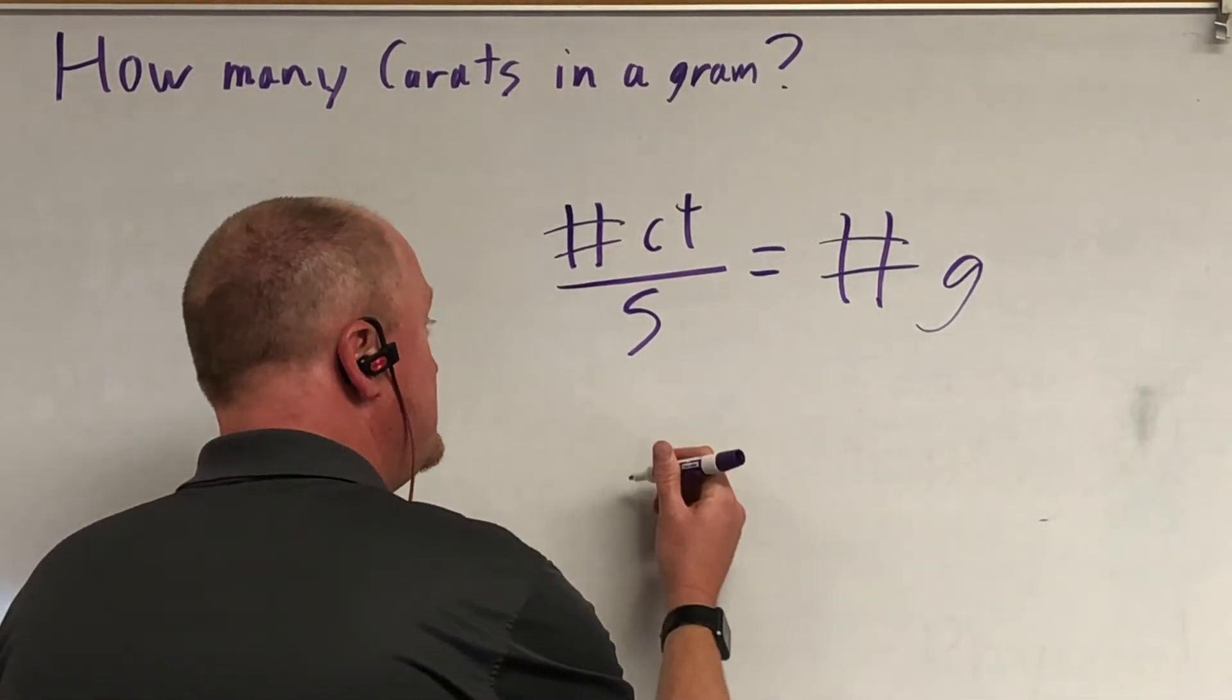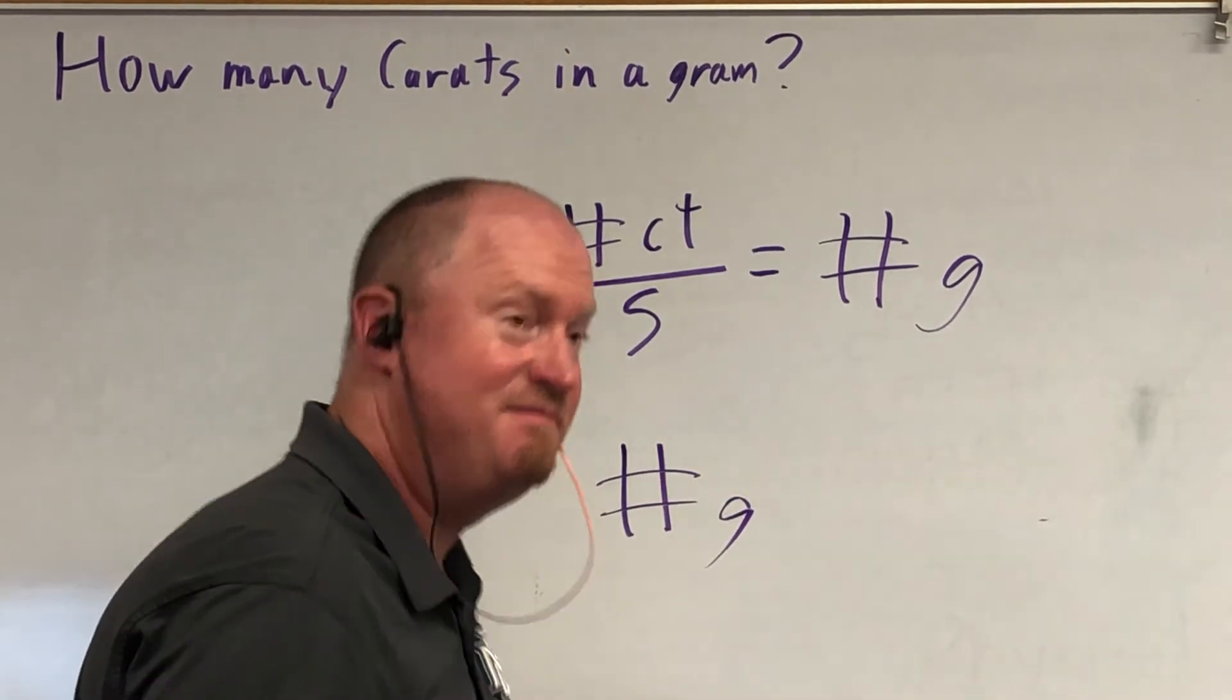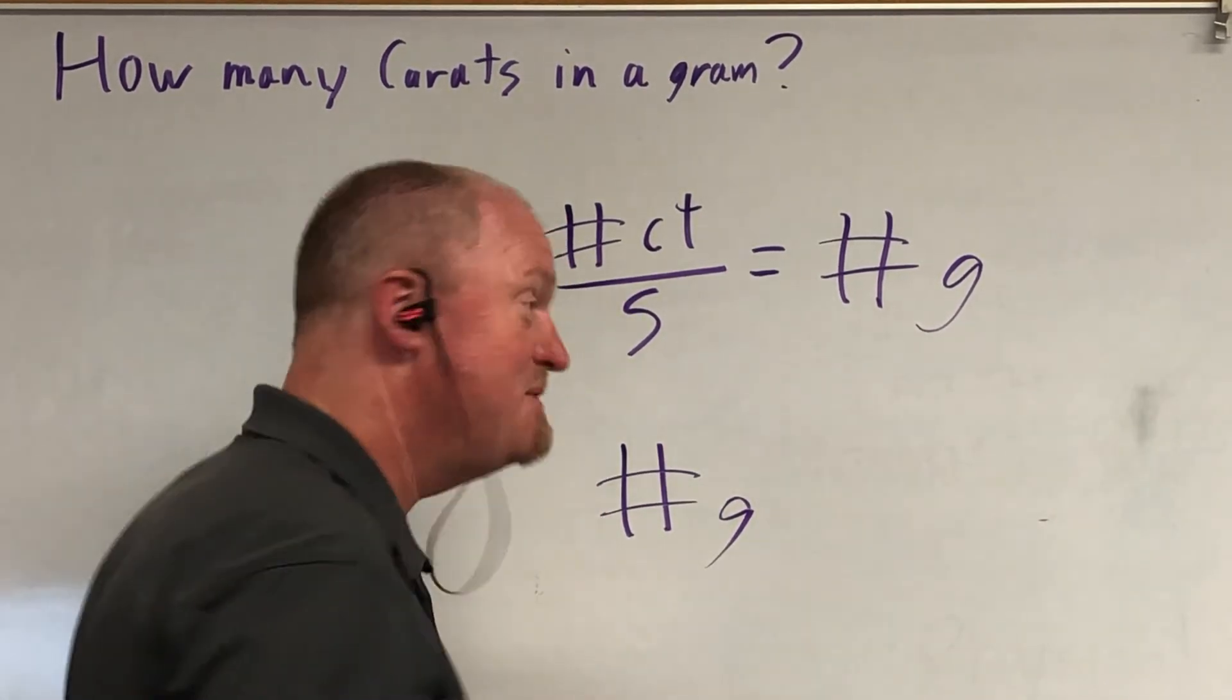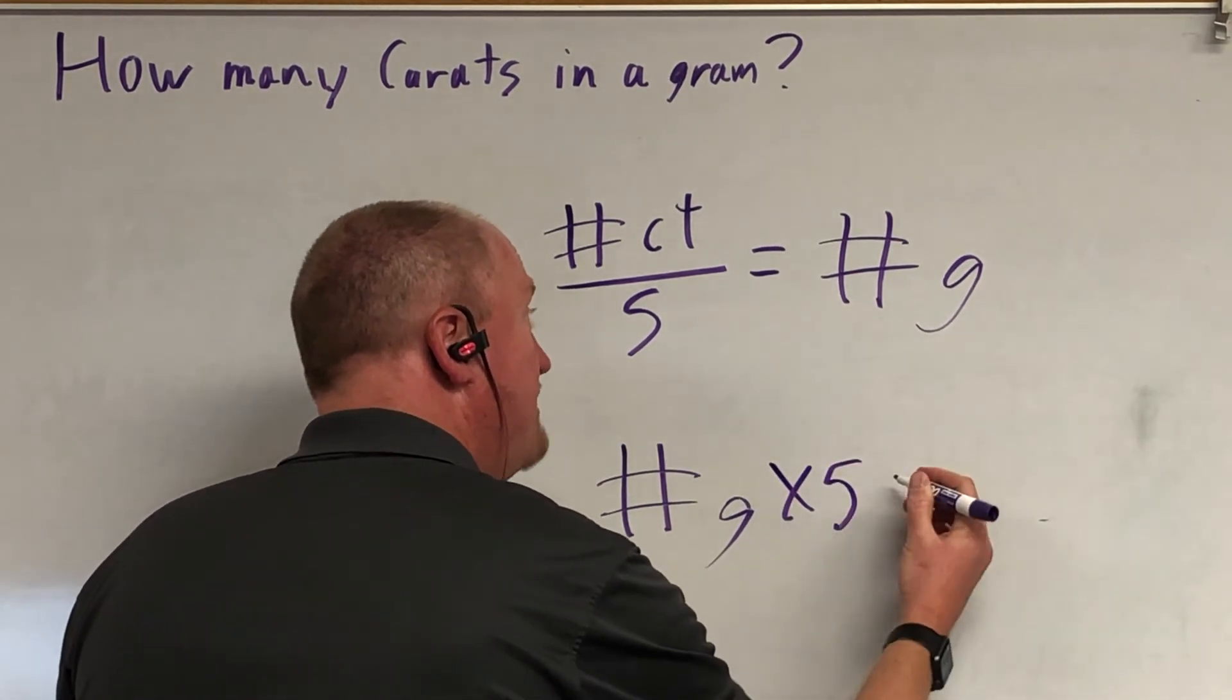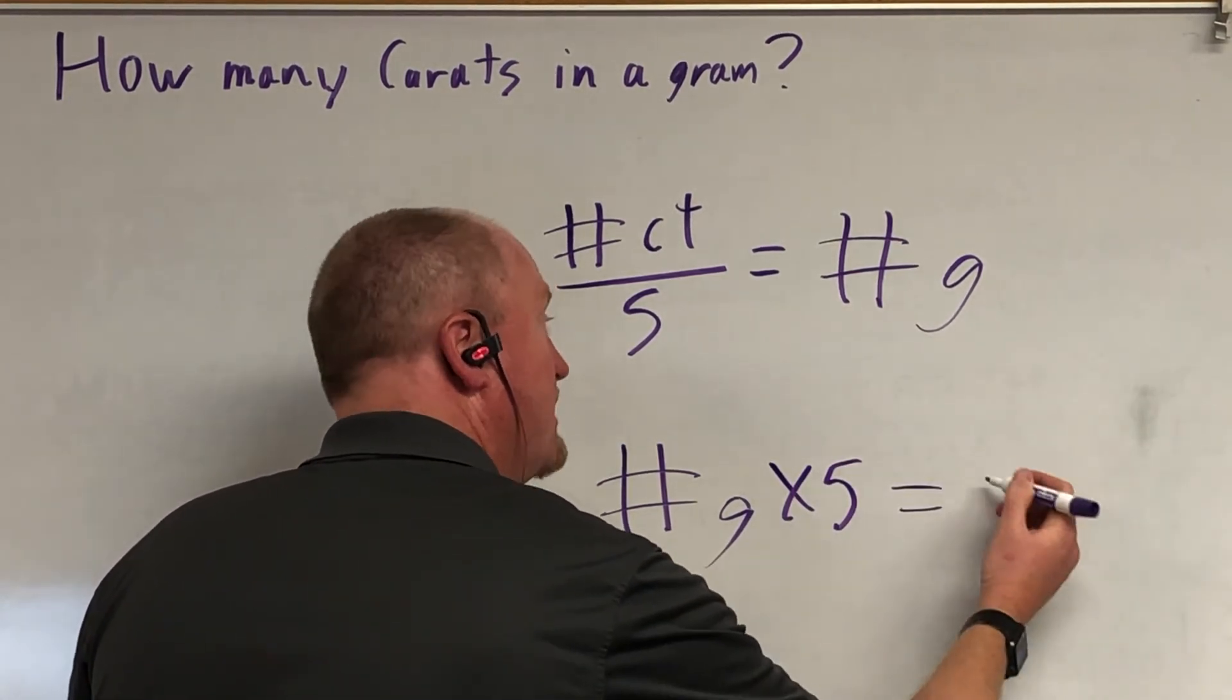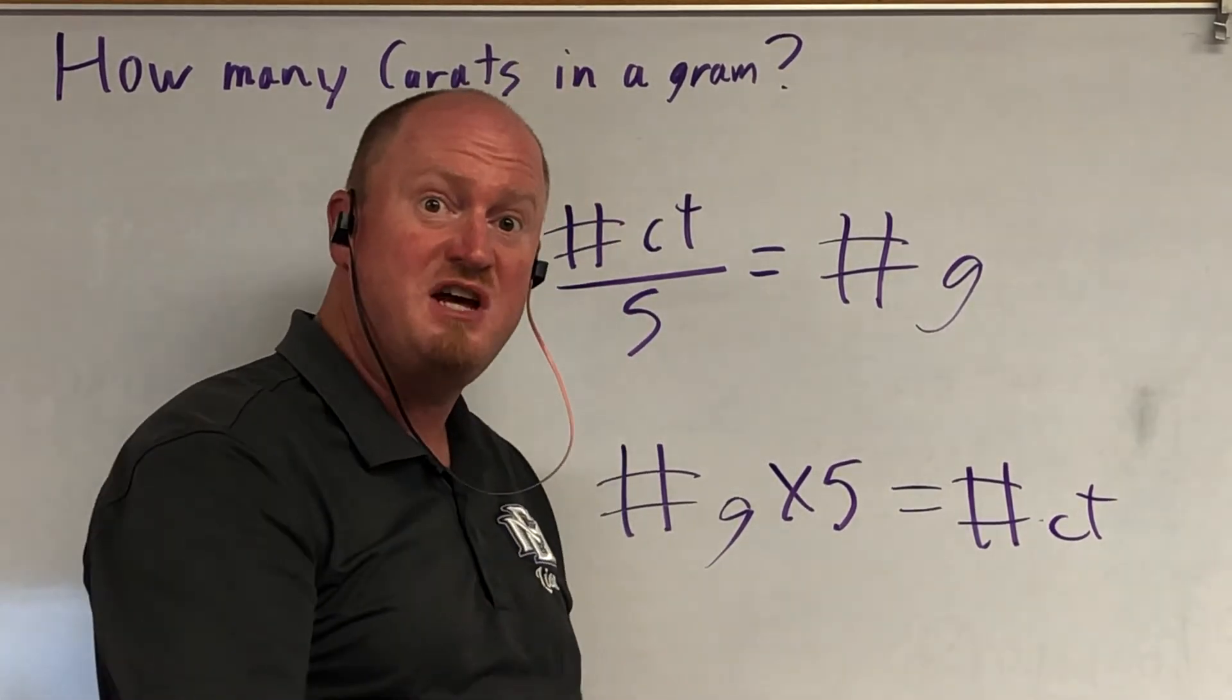And to go the other way, you simply reverse it. If you find a diamond and want to know how many carats it is, just take the number of grams, multiply it by five, and that will give you the number of carats. It's that simple.